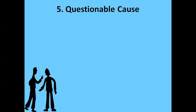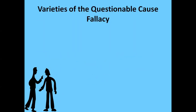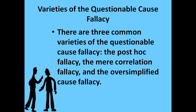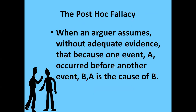The next fallacy is questionable cause — when an arguer claims without sufficient evidence that one thing is the cause of something else. It has three varieties: the post hoc fallacy, the mere correlation fallacy, and the oversimplified cause fallacy. The post hoc fallacy occurs when an arguer assumes without adequate evidence that because one event A occurred before another event B, A is the cause of B.